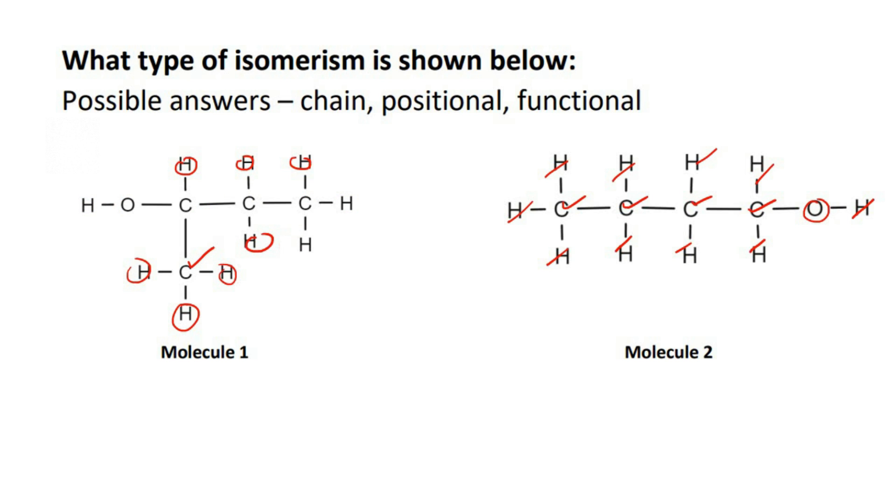So that is what isomers are - isomers have the same amount of each element. So that's an isomer, but now you get different types of isomers.